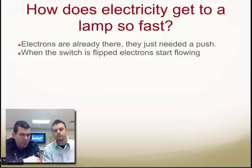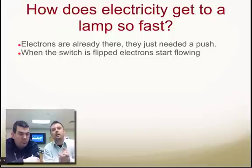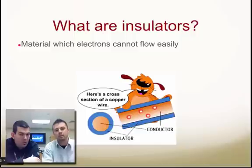How does electricity get to a lamp so fast? I mean, you turn it on and the next thing you know, it's on. The electrons are already there in the wire. As soon as they are sitting there in the wire connected to those atoms, there's just that little bit of push that the battery or the power plant gives it, then those electrons are used to light up that light.